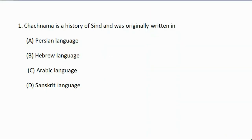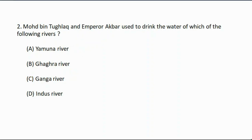Question number one: Chachanama, as a history of Sindh, was originally written in — option A: Persian language, option B: Hebrew language, option C: Arabic language, option D: Sanskrit language. The correct answer is option C, Arabic language.